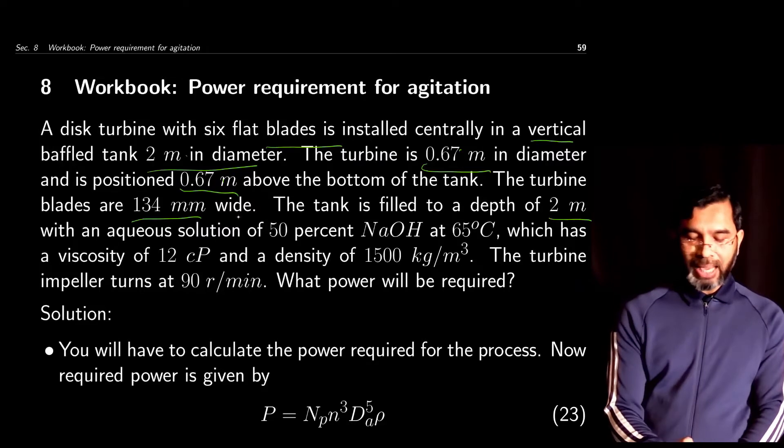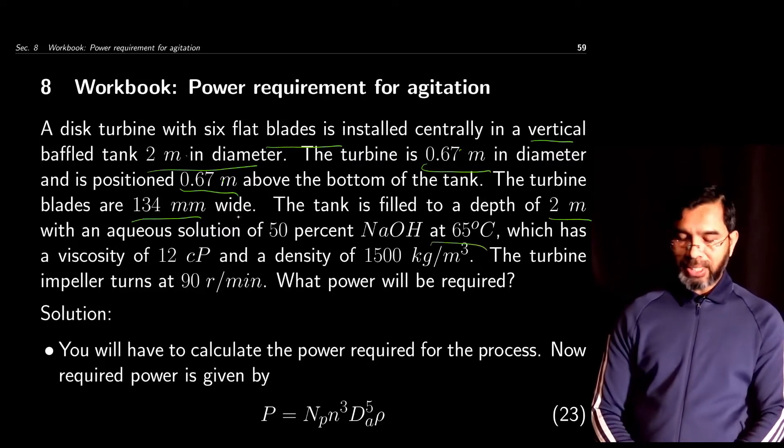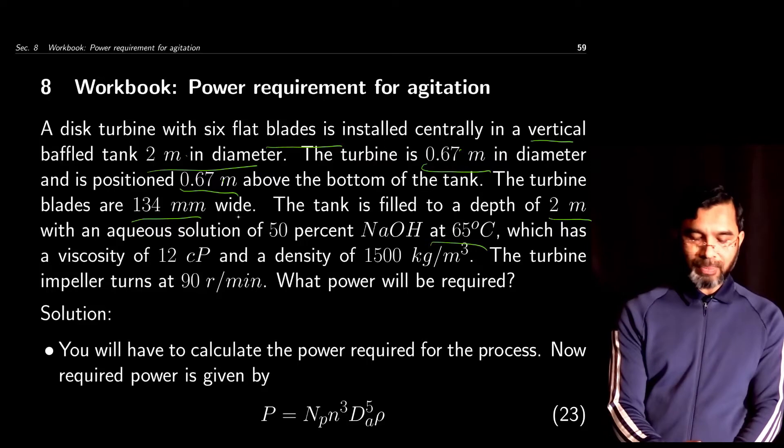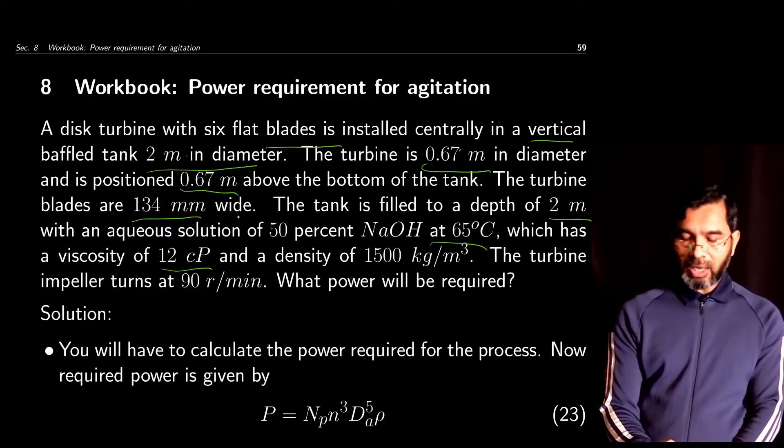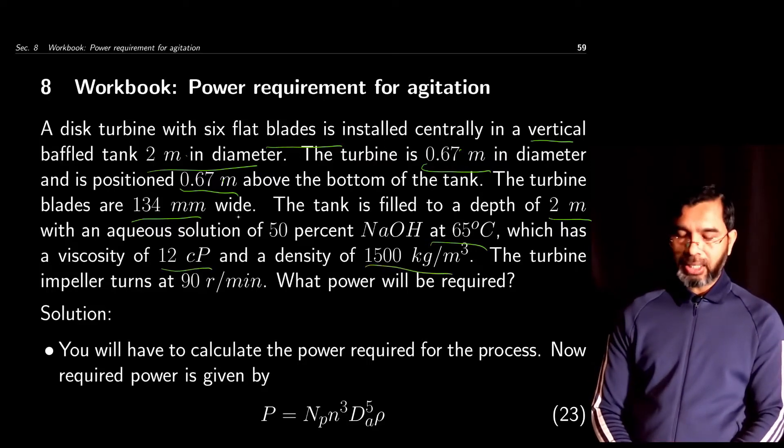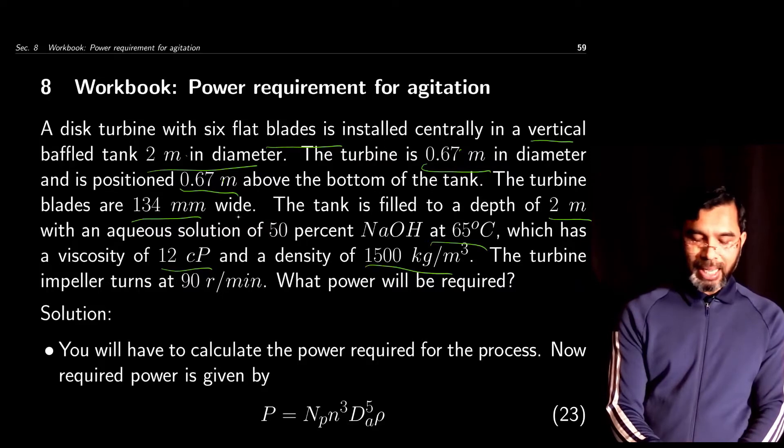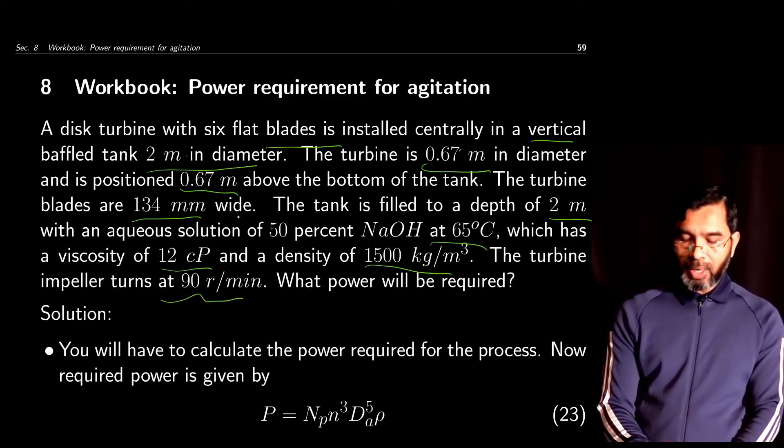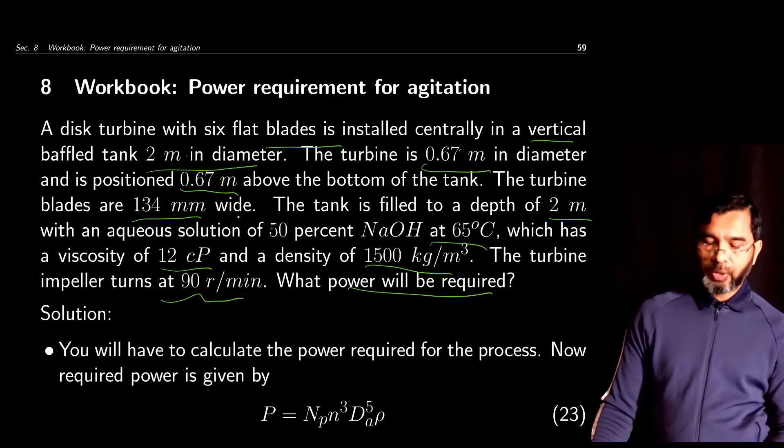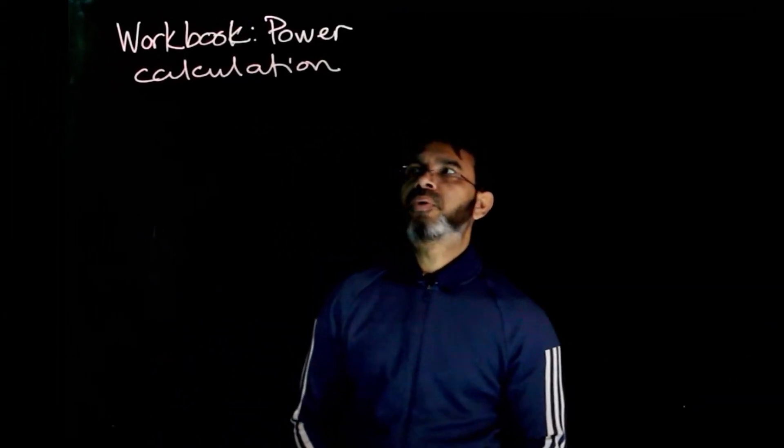The tank contains an aqueous solution of 50% sodium hydroxide at 65°C, which has a viscosity of 12 centipoise and a density of 1500 kg/m³. The turbine impeller rotates at 90 rpm. What power will be required? From this given information, you need to calculate the power required.